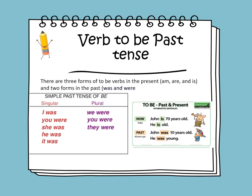We say John was, because John is one person, so the right form of verb to be is was. John was ten years old. He was young.